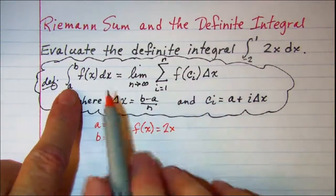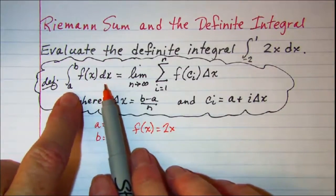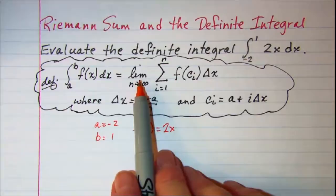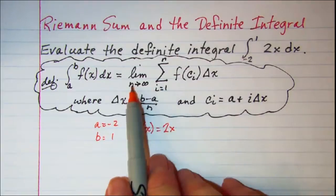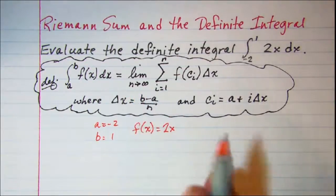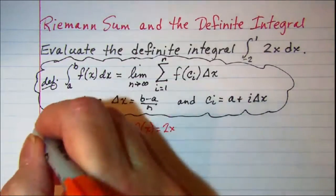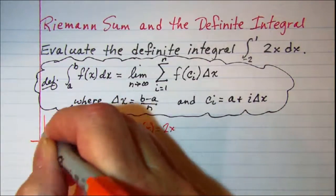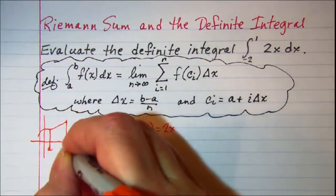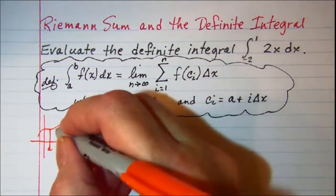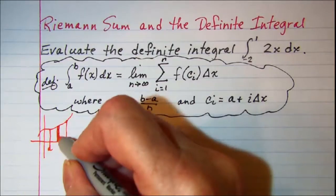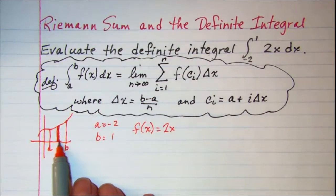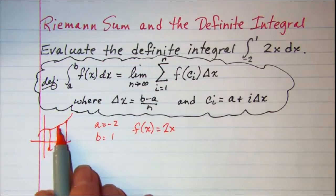To use our definition of the definite integral, it is equal to the limit as n approaches infinity of the Riemann sum. What this is saying is that we take the interval from a to b, partition it into rectangles, and find the limit as the number of rectangles approaches infinity. That will give us the area under the curve.